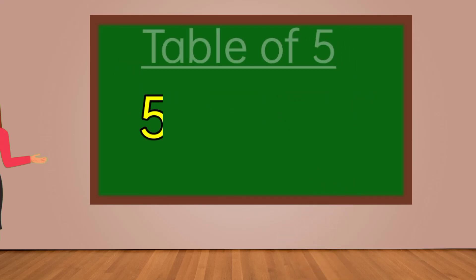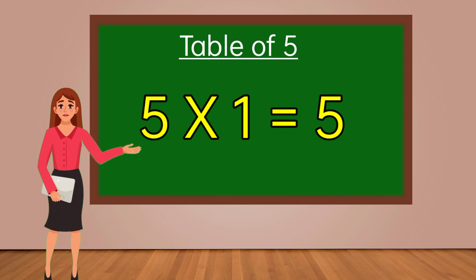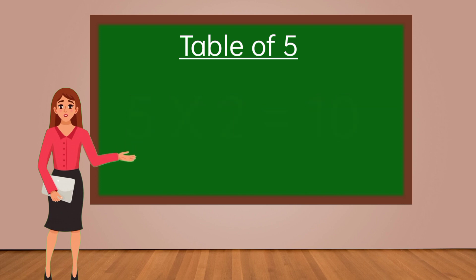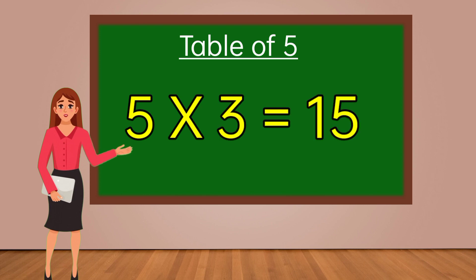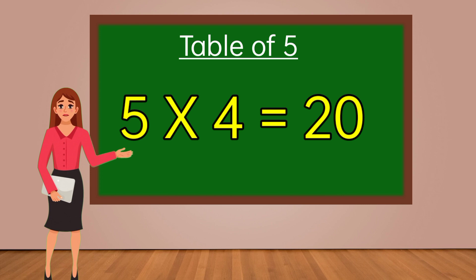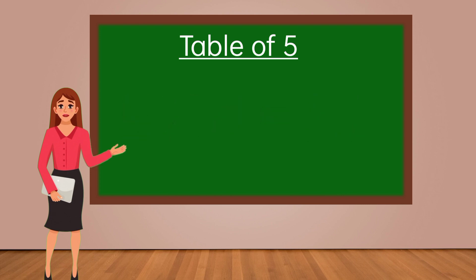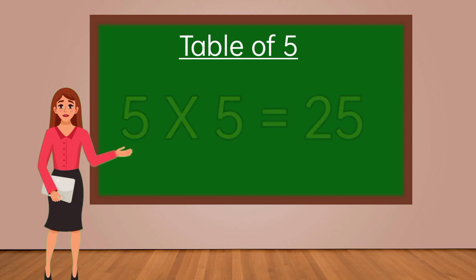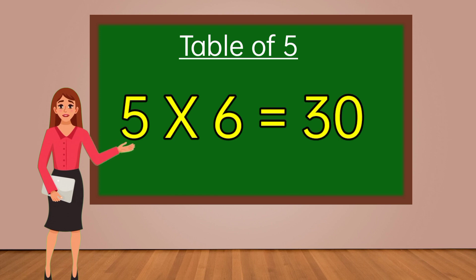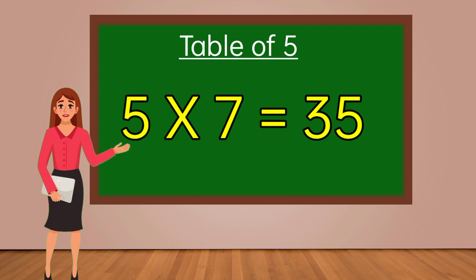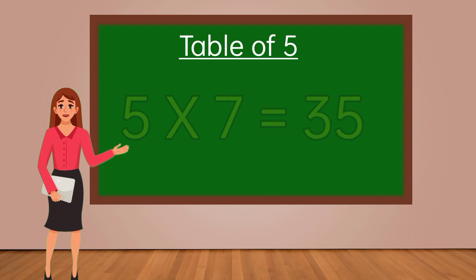Table of 5. 5 ones are 5. 5 twos are 10. 5 threes are 15. 5 fours are 20. 5 fives are 25. 5 sixes are 30.